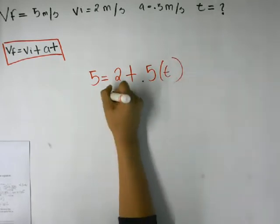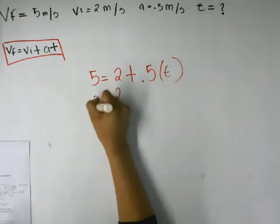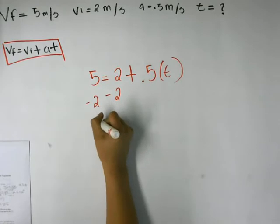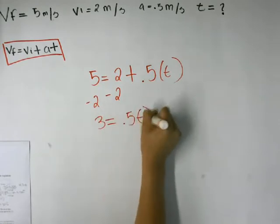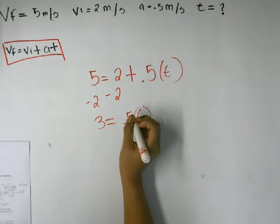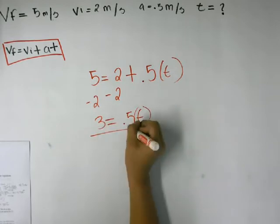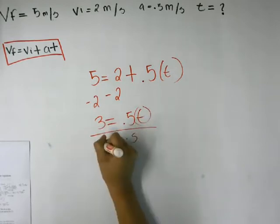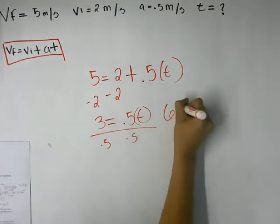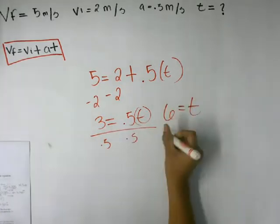We take away 2 from each side. So now 3 equals 0.5 T. And now we just divide each side by 0.5. And 3 divided by 0.5 is actually going to give us 6. So T equals 6, and that would be our answer.